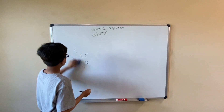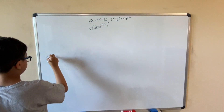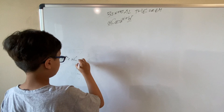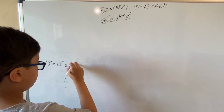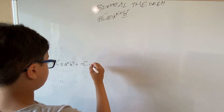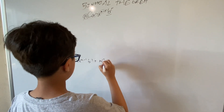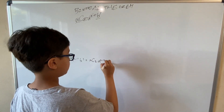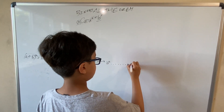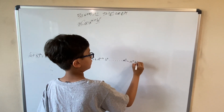Let's move on to examples. If you take the general expression: (a + b) to the power n equals nC0 · a^n · b^0, plus nC1 · a^(n-1) · b^1, plus nC2 · a^(n-2) · b^2, and so on, until the last term which is nCn · a^0 · b^n.